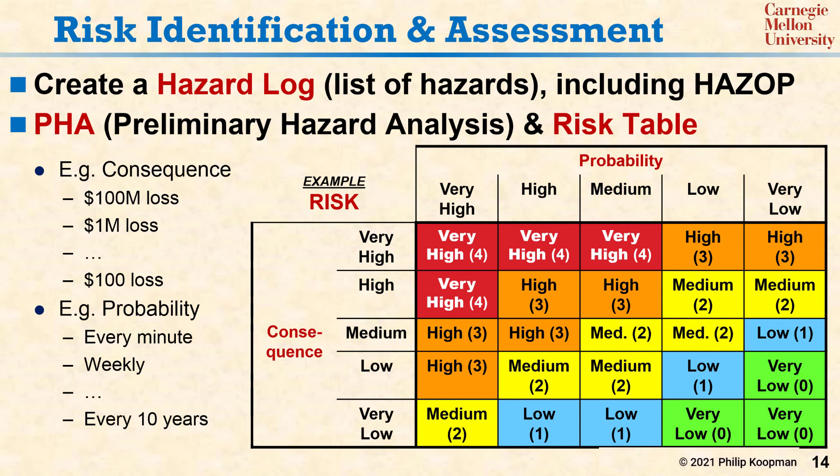Note that each risk has a number from 0 through 4 associated with it. That corresponds to a SIL, as we'll see on the next slide.